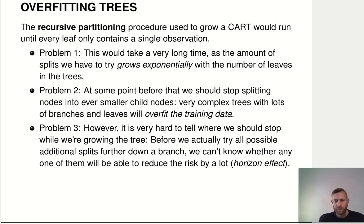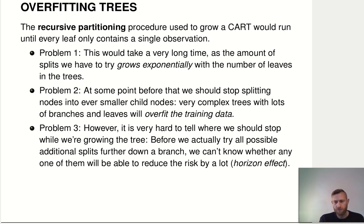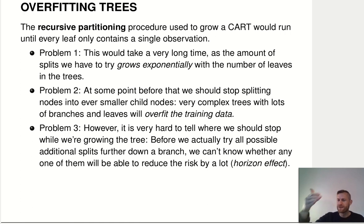The third problem is of a different nature. It's basically a consequence of how we build the tree. It's hard to tell, when you're looking at a specific node, whether it's going to be worth it to subdivide that node further, because we don't know what the branch that branches off these nodes will look like. We have a problem with the horizon that our method has — the method is greedy and very short-sighted. It only looks at that node right now and doesn't take into consideration what happens after that.